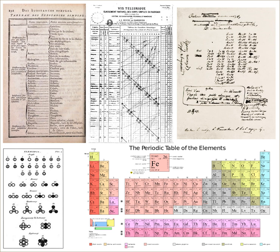Lavoisier's book contained a list of 'simple substances' that he believed could not be broken down further, which included oxygen, nitrogen, hydrogen, phosphorus, mercury, zinc, and sulfur, which formed the basis for the modern list of elements. Lavoisier's list also included 'light' and 'caloric,' which at the time were believed to be material substances. He classified these substances into metals and non-metals.